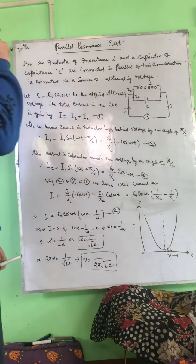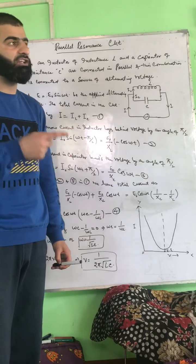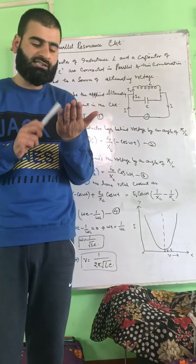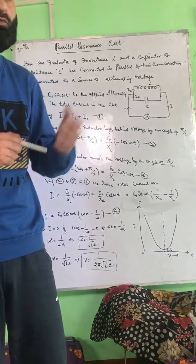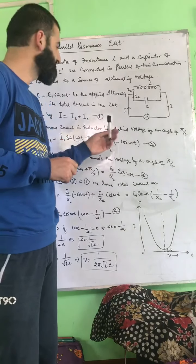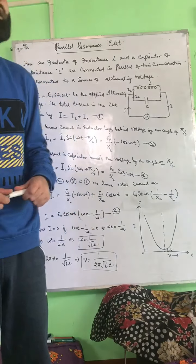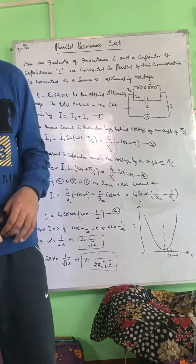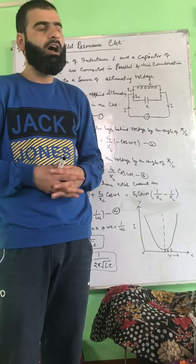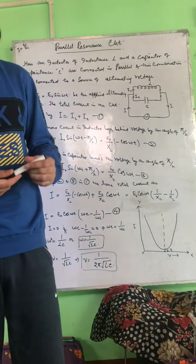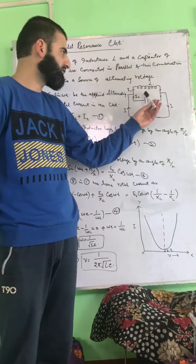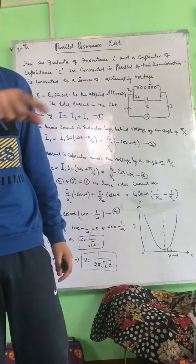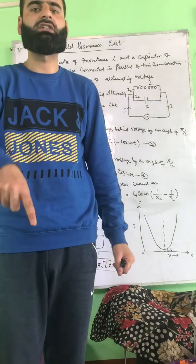Remember that the series resonant circuit is called an acceptor circuit, while this parallel resonant circuit is called a rejector circuit. In transmitting stations, this parallel resonant circuit is used to reject a particular frequency. For example, in a broadcasting system, if we cannot transmit a particular frequency, we match that frequency to the resonant frequency of our parallel LC circuit. At resonance, the impedance is maximum and current is zero, so that frequency is rejected while other frequencies are transmitted.